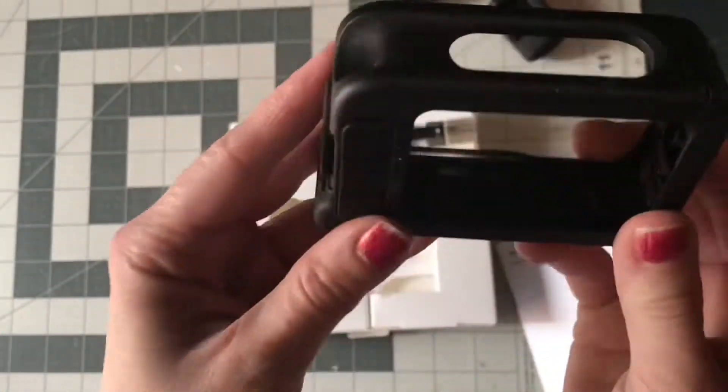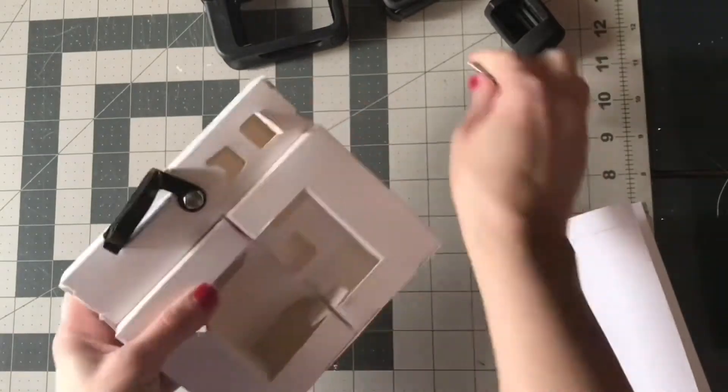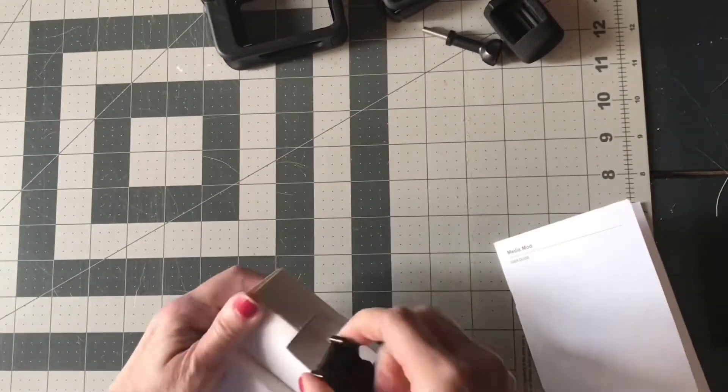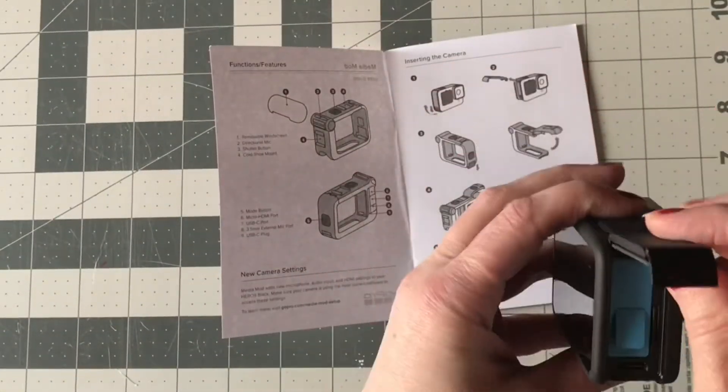Here's what the Media Mod looks like, and then the little attachments so you can attach it to your tripod or whatever. I already have those pieces, but I guess if you need extras.